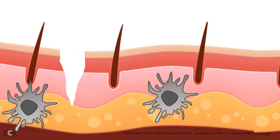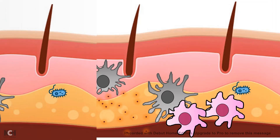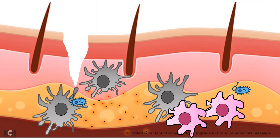Dendritic cells also have toll-like receptors and can detect the invasion of foreign substances. Once they detect the invasion, one of the things they do is secrete cytokines. These cytokines are alarming signals which bring more macrophages and dendritic cells to the site of injury so they can combat the situation — like calling for backup.